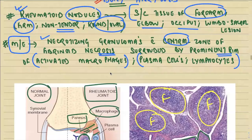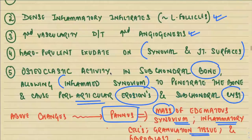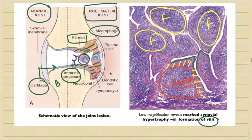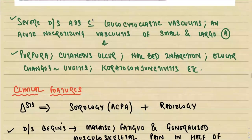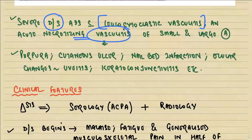In severe rheumatoid arthritis, the disease may be associated with leukocytoclastic vasculitis — an acute necrotizing vasculitis involving small and larger arteries. It may give rise to purpura, cutaneous ulcers, nail bed infarction, and ocular changes like uveitis and keratoconjunctivitis. Sometimes it may also involve the lungs and pleura.